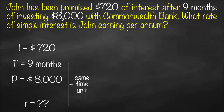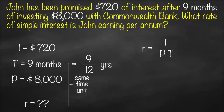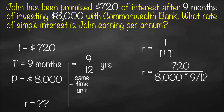We need to convert time into years to match the annual interest rate. There are 12 months per year, so 9 months ÷ 12 = 0.75 years. Using the formula: simple interest rate = I ÷ (P × t) = 720 ÷ (8,000 × 9/12), this gives us a simple interest rate of 12% per annum, because interest and time now have the same time unit.